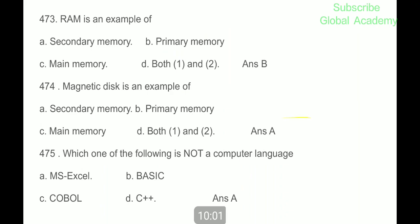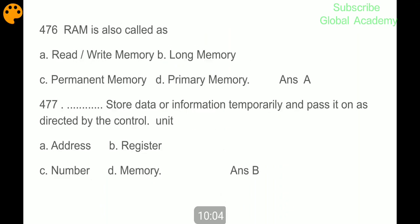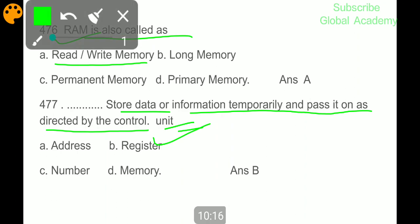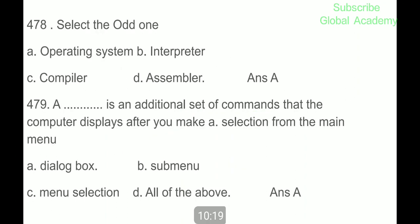RAM is also called read write memory. Register stores data or information temporarily and passes it on as directed by the control unit. Select the odd one: operating system, interpreter, compiler, assembler. Operating system. A dialog box is an additional set of commands that the computer displays after you make a selection from the main menu.